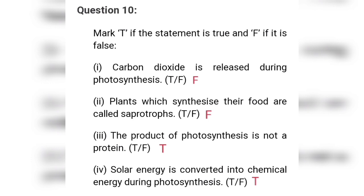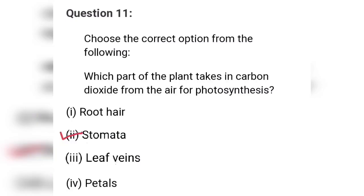Question ten: true and false. Carbon dioxide is released during photosynthesis — this is FALSE; plants take in CO2 and release oxygen. Plants which synthesize their own food are called saprotrophs — this is also FALSE; they are called autotrophs. The product of photosynthesis is not a protein — this is TRUE; the product is carbohydrate and oxygen. Solar energy is converted into chemical energy during photosynthesis — this is TRUE.